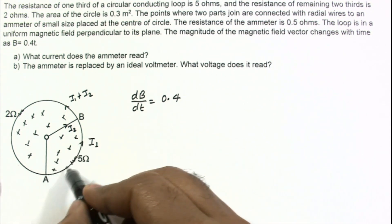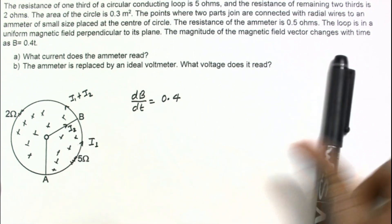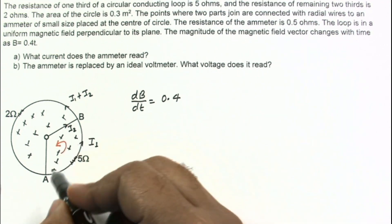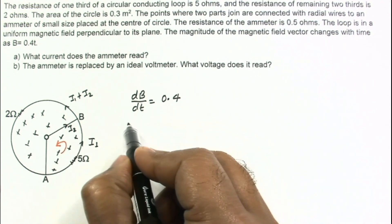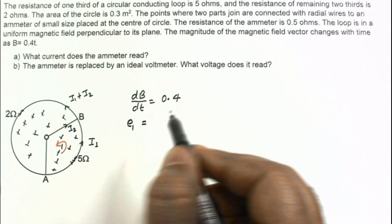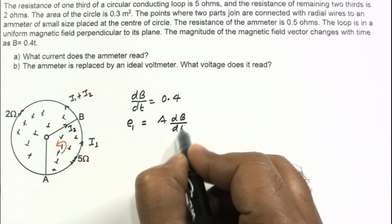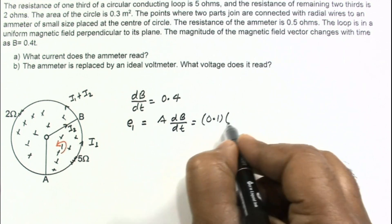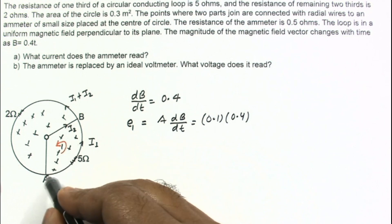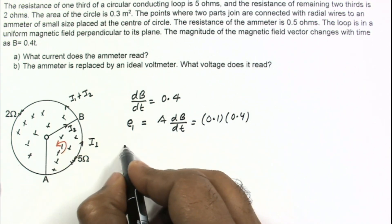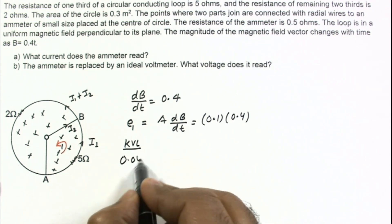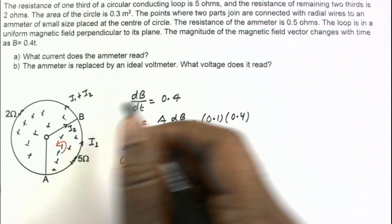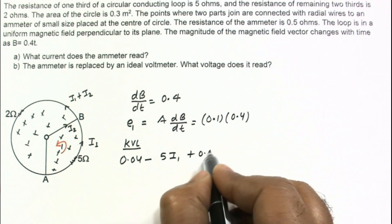Writing the KVL equation for the smaller loop, moving in the anti-clockwise sense: the EMF induced in this loop, E1, equals area times dB/dt. The area of the one-third section is one-third of 0.3, which is 0.1; multiplied by dB/dt = 0.4, giving E1 = 0.04 V. The KVL equation is: 0.04 − 5·i1 + 0.5·i2 = 0. This is equation (1).